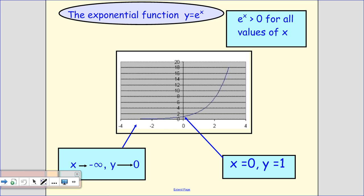Key points to note: as x tends to minus infinity, y tends to 0. So it goes on down here. When x equals 0, y is 1. And e to the x is bigger than 0. That means it's positive. It's only ever in this bit of the graph for all values of x.